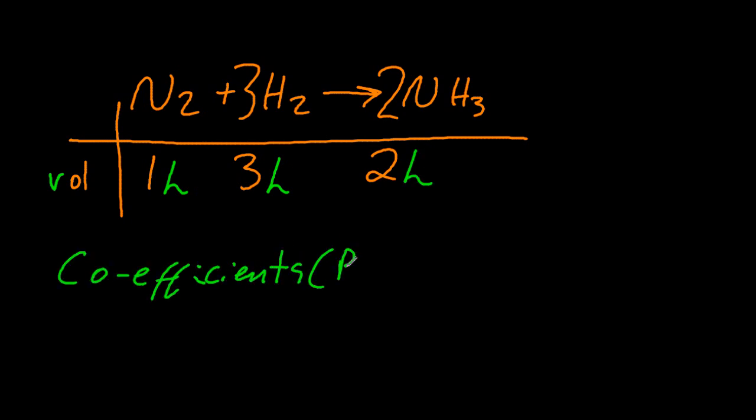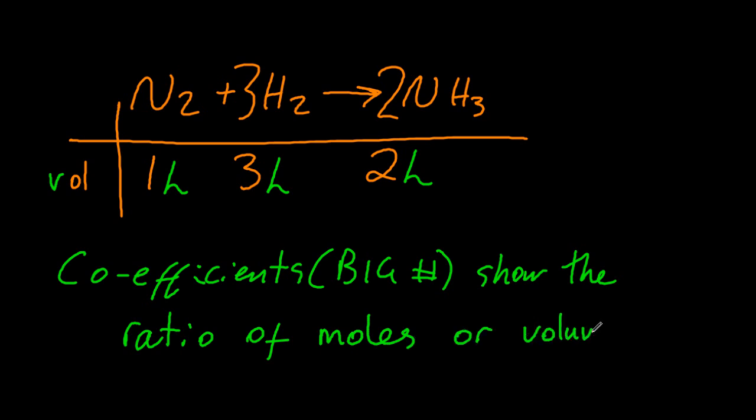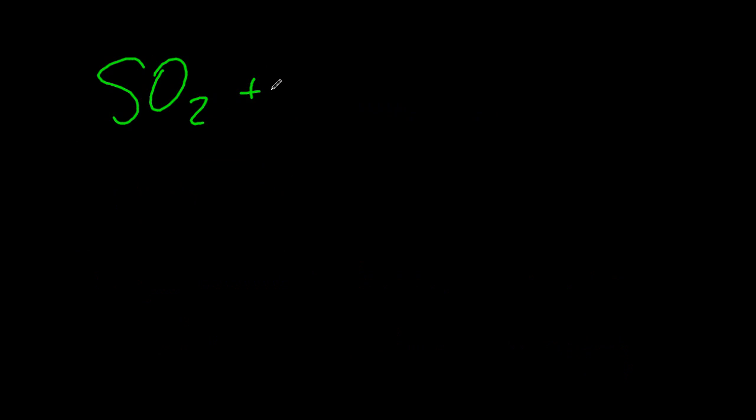Now, it looks like the answer should be four litres, but it's actually two litres. So the coefficients, the big numbers, show the ratio of moles in an equation, or the volume of gases. Assuming the gas is at the same temperature, STP is what we normally choose.